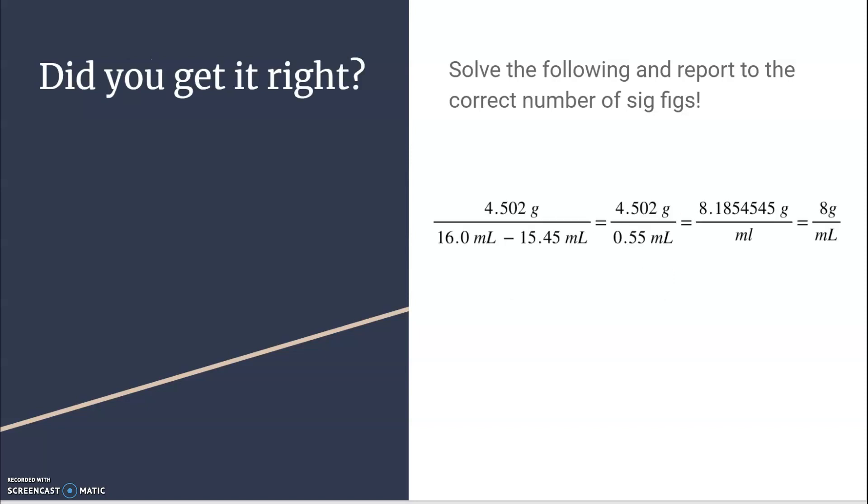So, did you get it right? Here was the initial problem. This is the numerator. I subtracted these. This is the denominator and then divided the two.